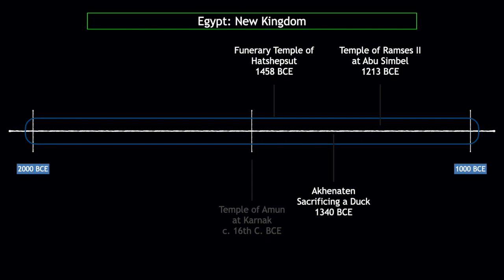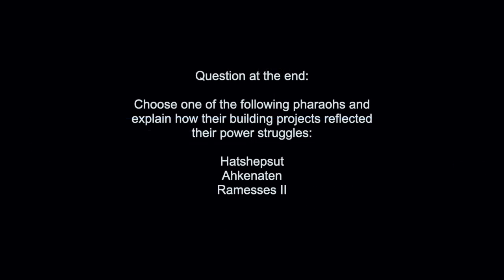We're going to talk about Hatshepsut, who was a queen. We're going to talk about Akhenaten, who is a guy that kind of tried to change the rules a little bit, and we'll see what happened with him. And then we'll finish with Ramses II and talk about his temple at Abu Simbel, which is on the southern border of the Egyptian Empire. One of your big questions today will be to choose one of the following pharaohs — Hatshepsut, Akhenaten, Ramses II — and explain how their building projects reflected their power struggles. So that's today's theme: power struggles.